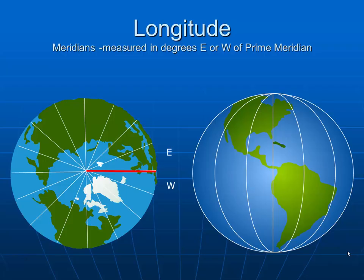Similarly, we can use longitude lines or meridians. These are lines measured east or west of the prime meridian, and they'll give us the rest of our system to be able to identify positions or locations on the Earth.